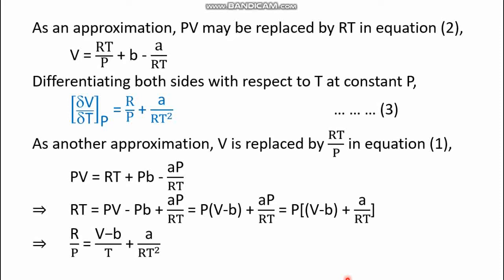In another approximation, v is replaced by RT/p in equation number one. So instead of a/v we write a/(RT/p), which equals ap/RT. Rearranging, pv − RT equals pb − ap/RT. Taking RT to the left-hand side and rearranging signs, we get: pv − RT = p(b − a/RT).